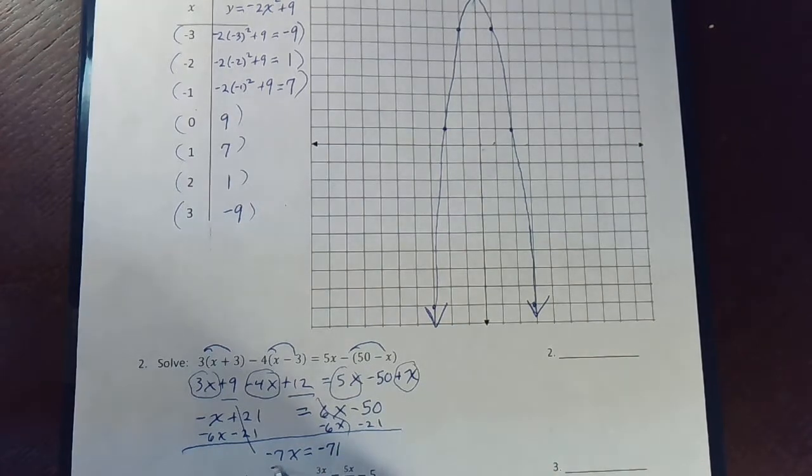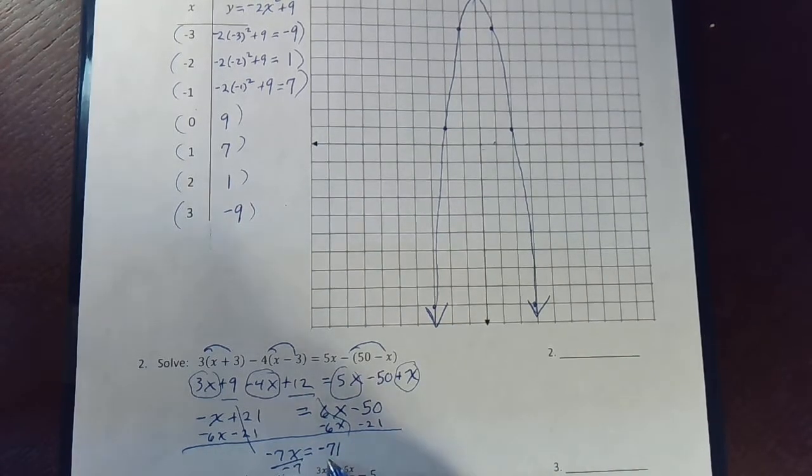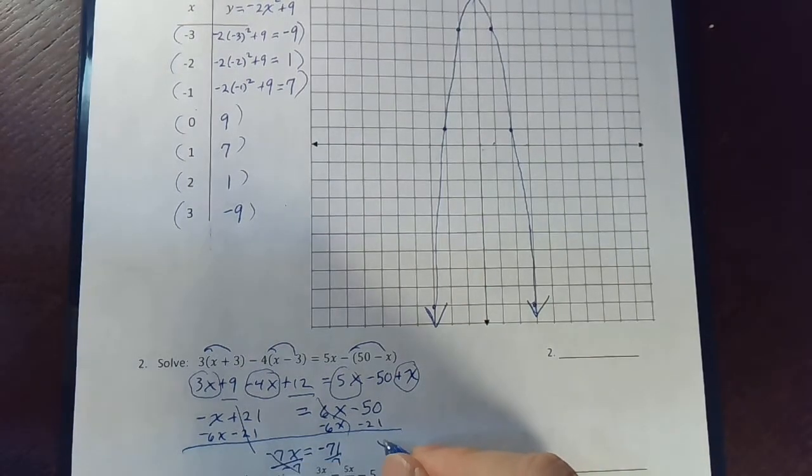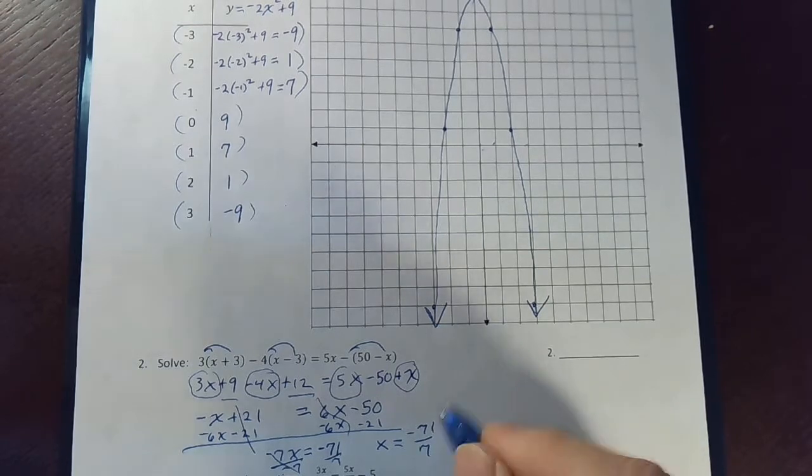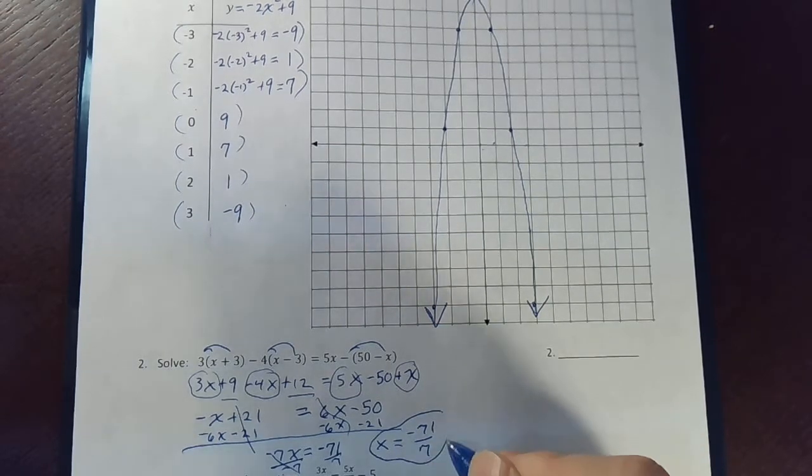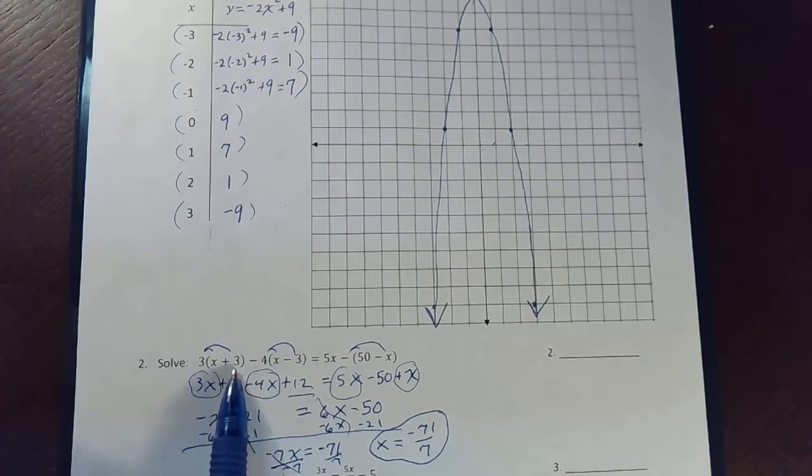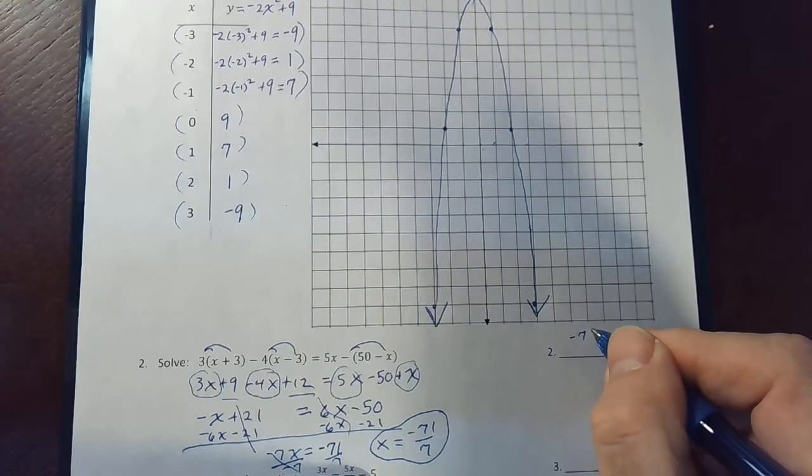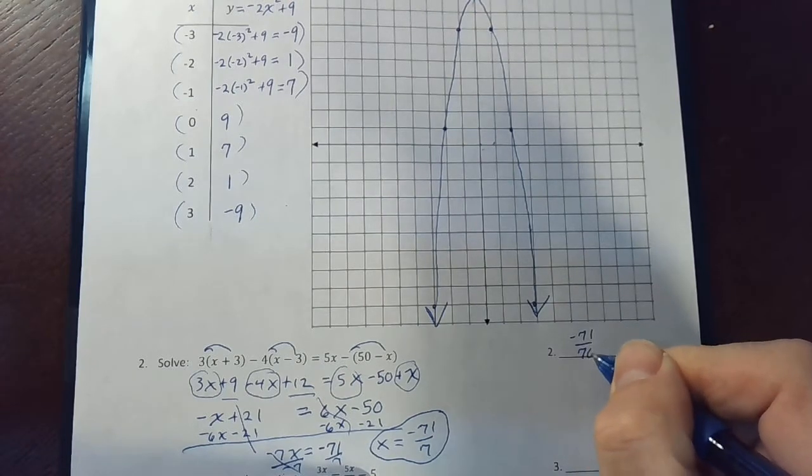So if we divide both sides by negative 7, we're done. That cancels, so x is equal to negative 71 over 7. An ugly answer and one that I don't want to plug in to verify. You can do that if you'd like. But, negative 71 over 7 is the answer.